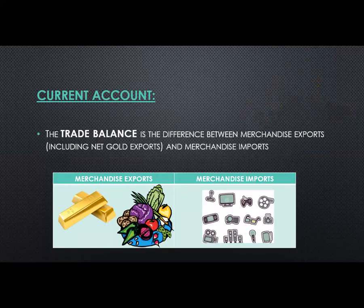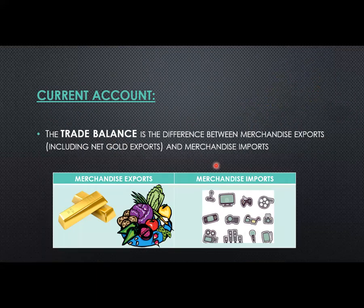A very important concept that you must be able to define as well as calculate is the trade balance. In the current account, we look at the difference between our merchandise exports, which includes our gold exports, and our merchandise imports. Adding all our physical goods and gold exports together and subtracting all imported goods gives us our trade balance.